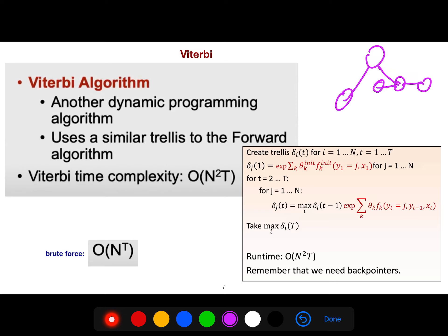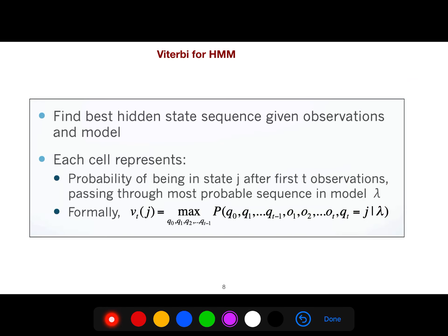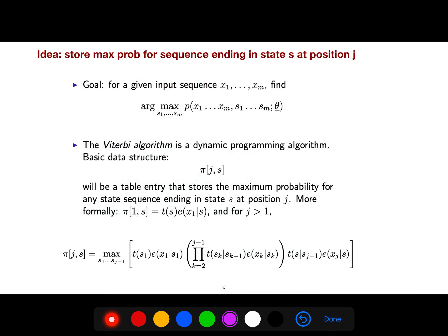Let's continue with the Viterbi algorithm. Viterbi algorithm is another dynamic programming structure. The structure is like this. Recursive is that from time t minus 1, you go to t. We find the best hidden state sequence given observations in the model. Each cell represents probability of being in state j after first t observations, these are observations passing through most probable sequence. Your lambda is modeled parameter. This is the data structure that you need, because you can recursively compute them very efficiently.